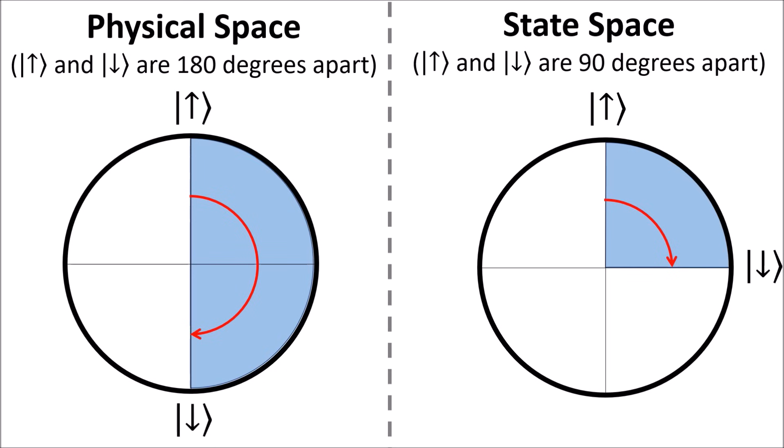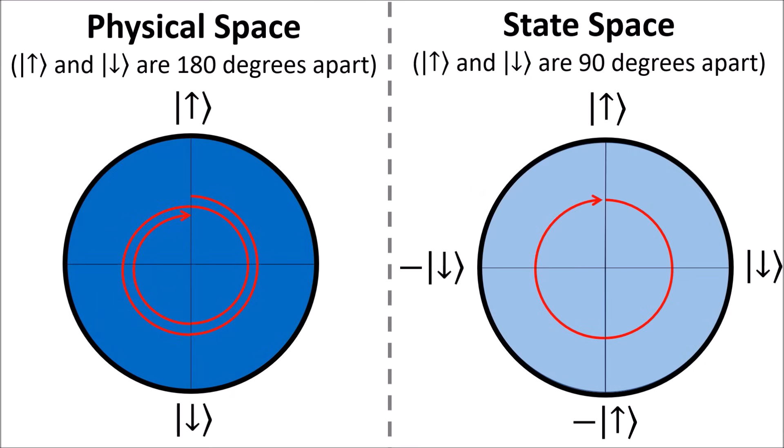So here we see there's an angle doubling relationship between these two spaces. A 90 degree turn in the abstract state space corresponds to a 180 degree turn in physical space. This means that doing a full turn in the state space corresponds to two full turns in physical space. Requiring two full turns to get back to where we started is exactly what we would expect from spinors, and so matter particles are best described using spinors.